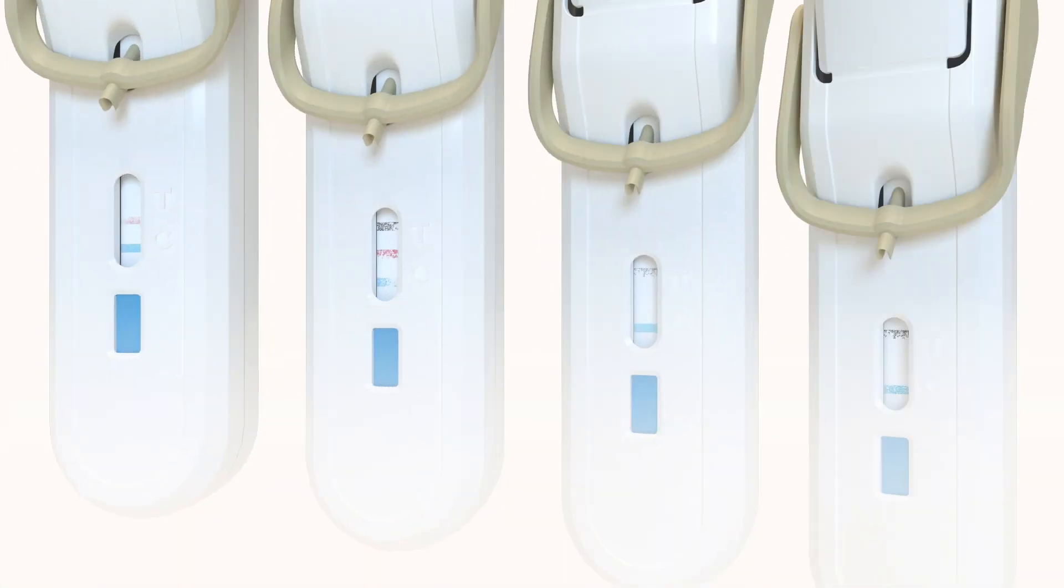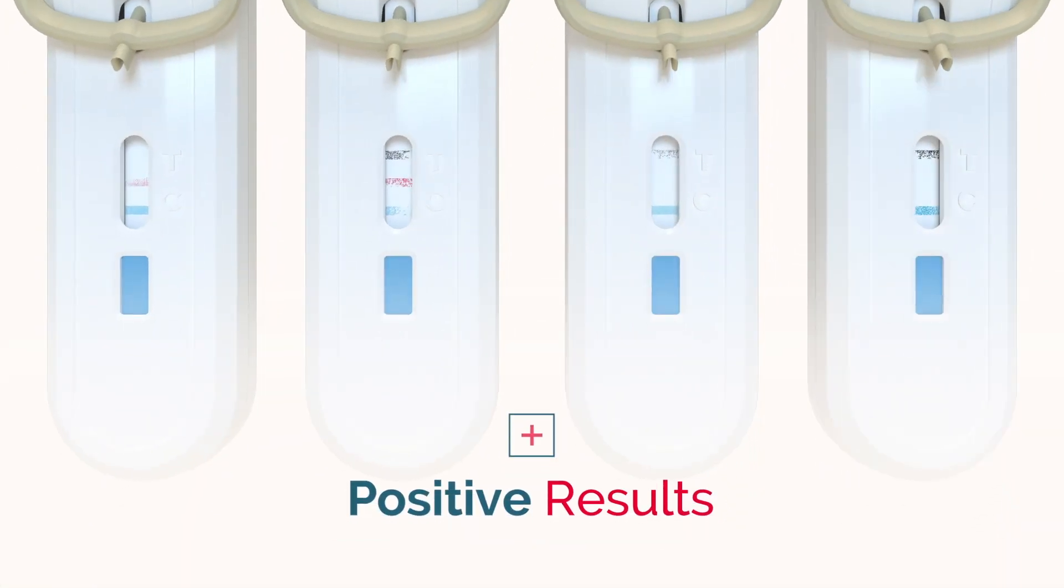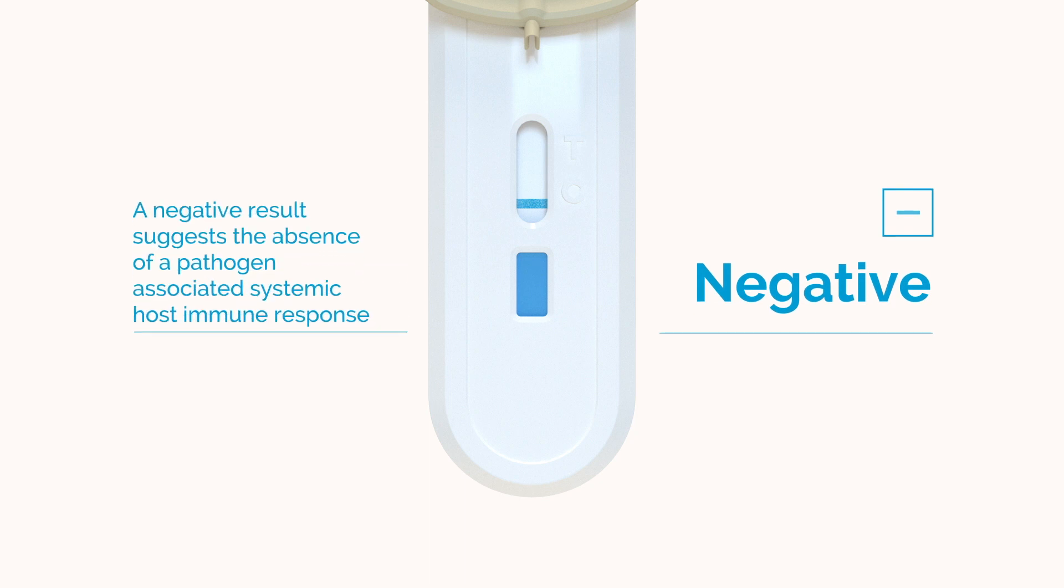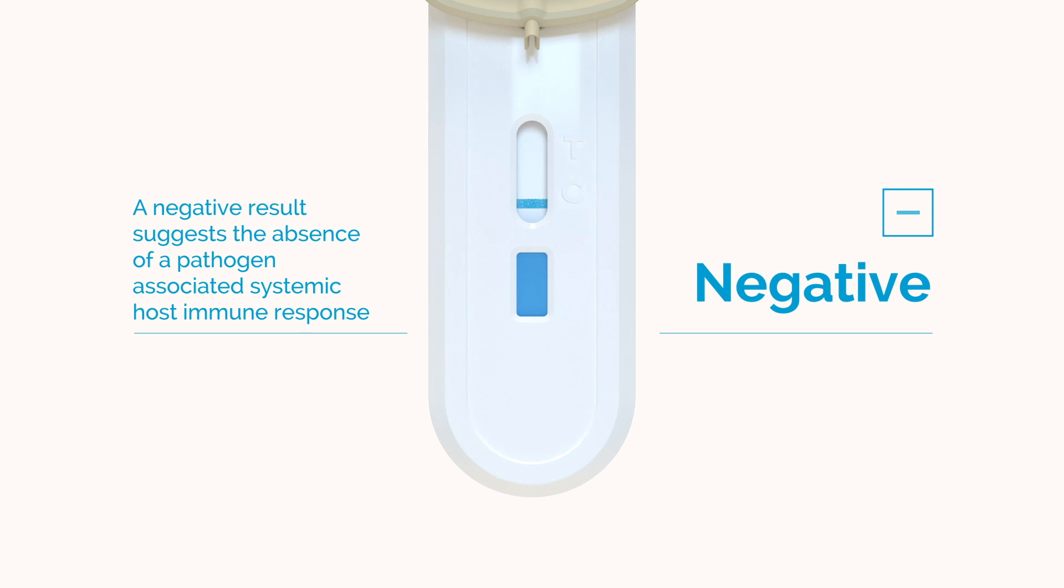Any indication of the presence of a red or black line, weak or broken, is consistent with a positive result. If only the blue line is visible, the result is negative. A negative result suggests the absence of a pathogen-associated systemic host immune response.